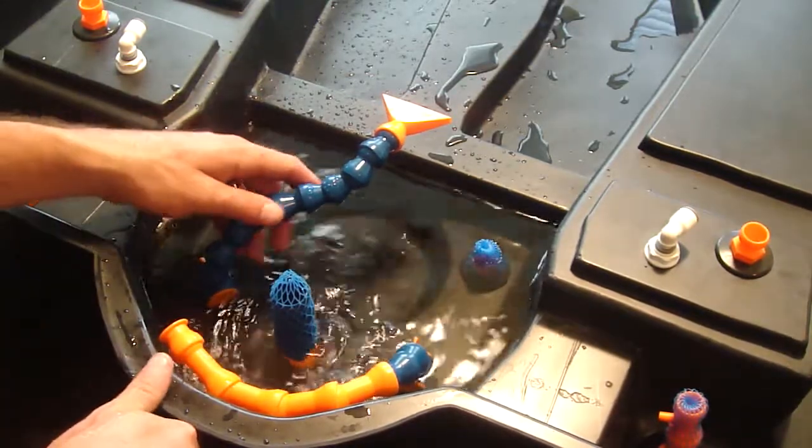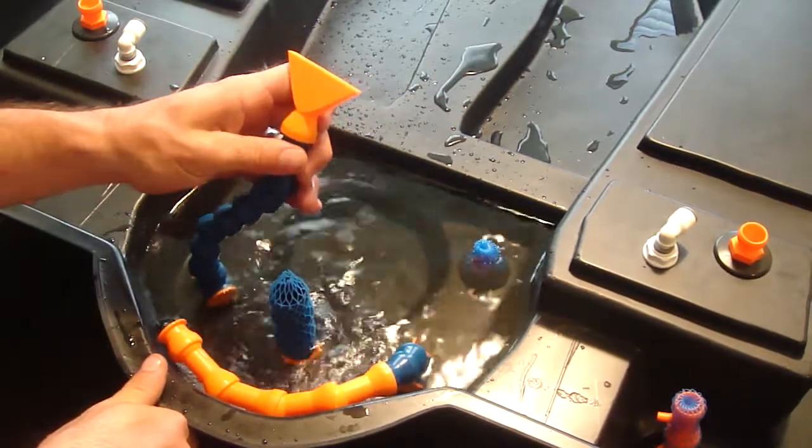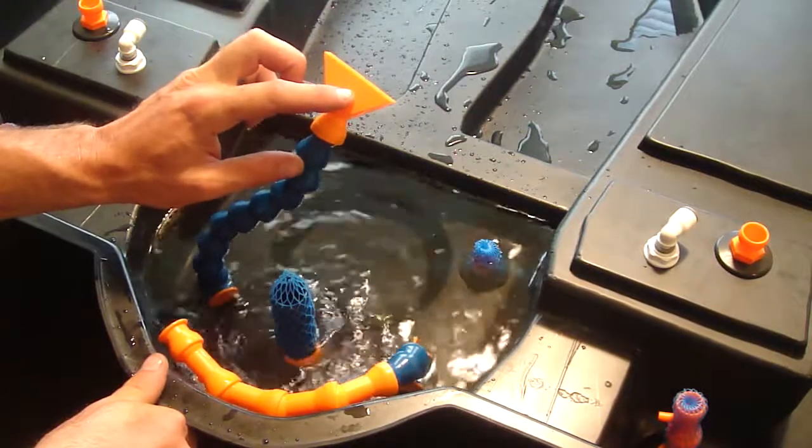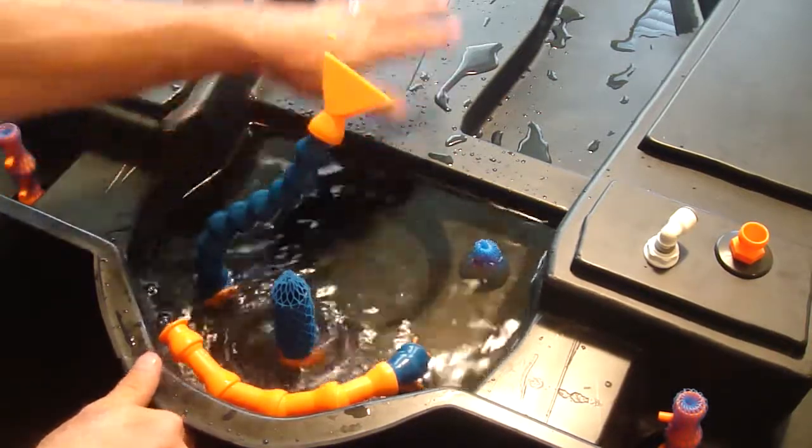Now the next pump is the ebb and flow pump or the nutrient film pump, whatever you want to use it for. This one is right now connected to the 400 gallon per hour pump so that you get maximum flow into the tray area.